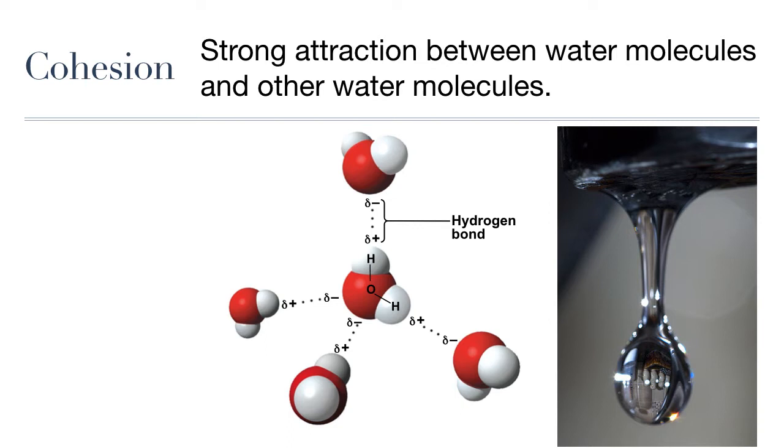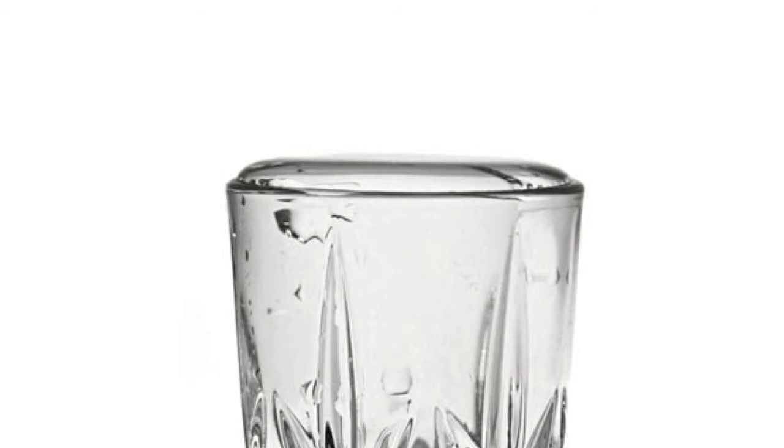One of the cool properties that results from these hydrogen bonds is called cohesion. Cohesion is just basically the attraction of a molecule to other molecules of the same substance. But water in particular has the highest cohesion of any non-metal substance because of its ability to form strong hydrogen bonds with other water molecules. This cohesion can be seen when you look at a drop of water. You can see how the water molecules are sort of sticking together.